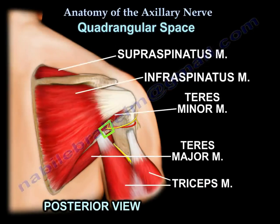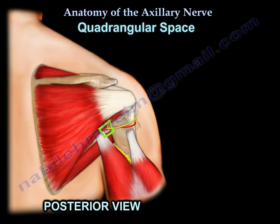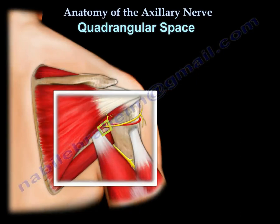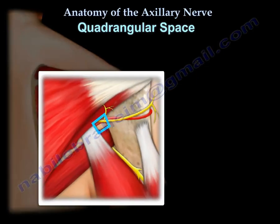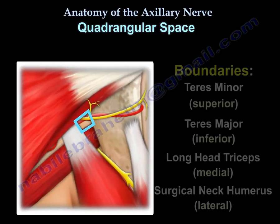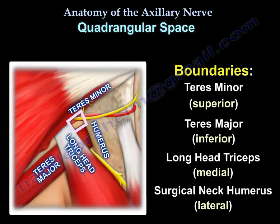This is the descriptive anatomy of the quadrangular space. The boundaries are the teres minor above, the teres major below, the long head of the triceps medially, and the humeral bone laterally.